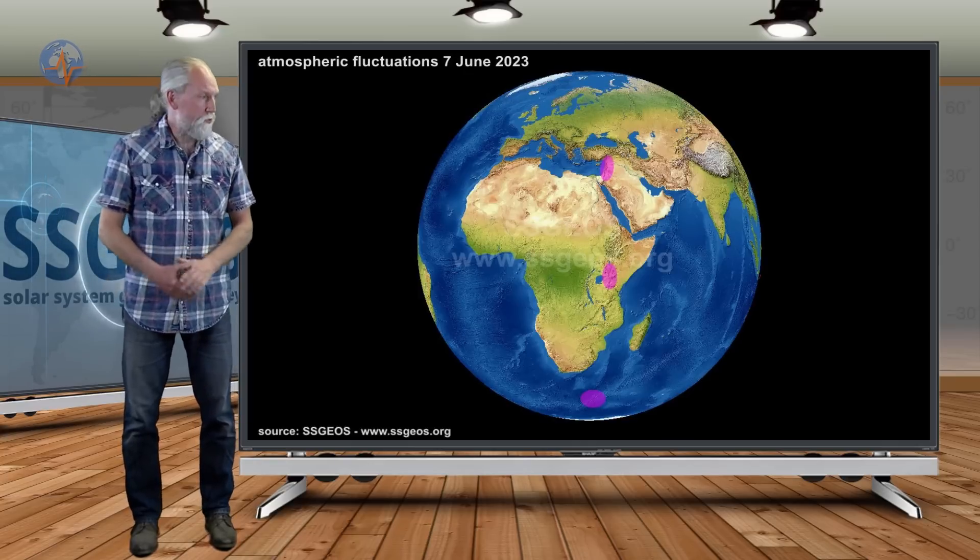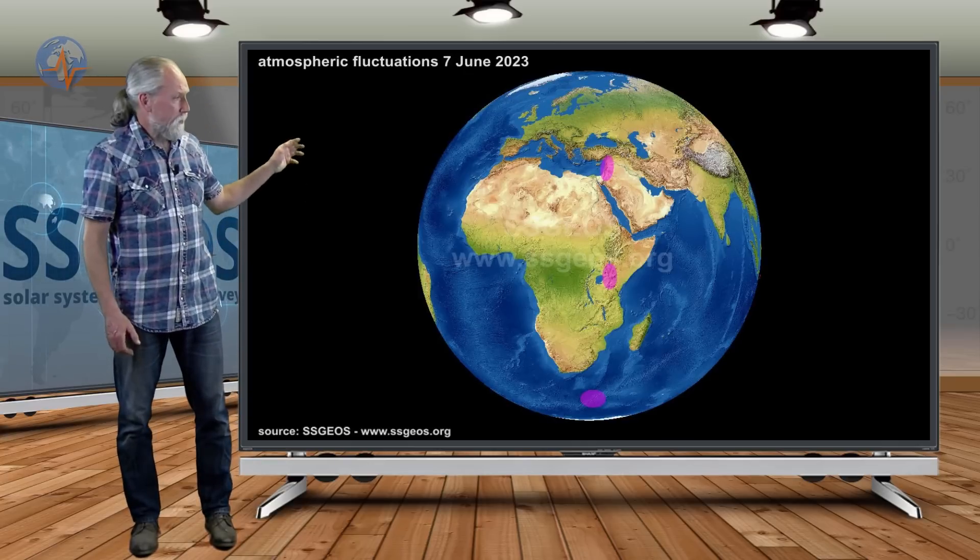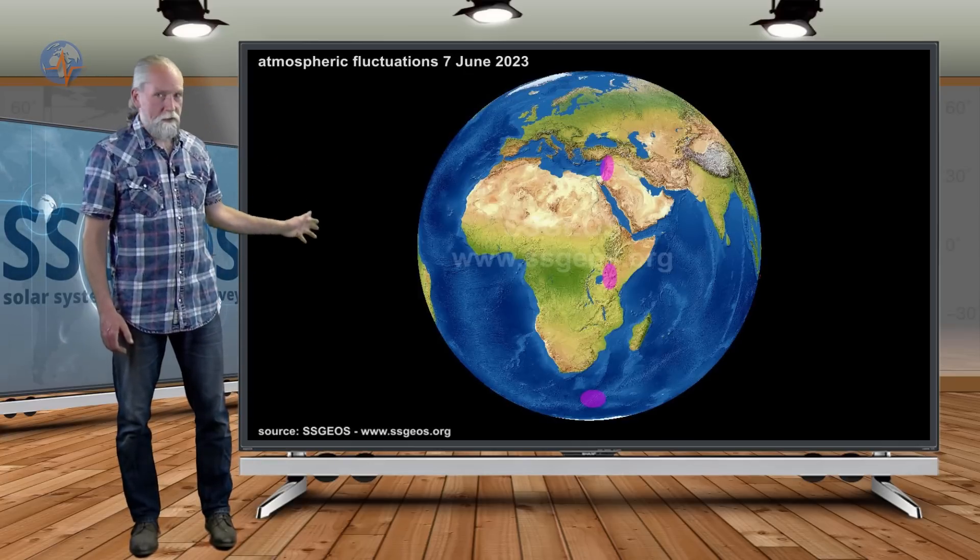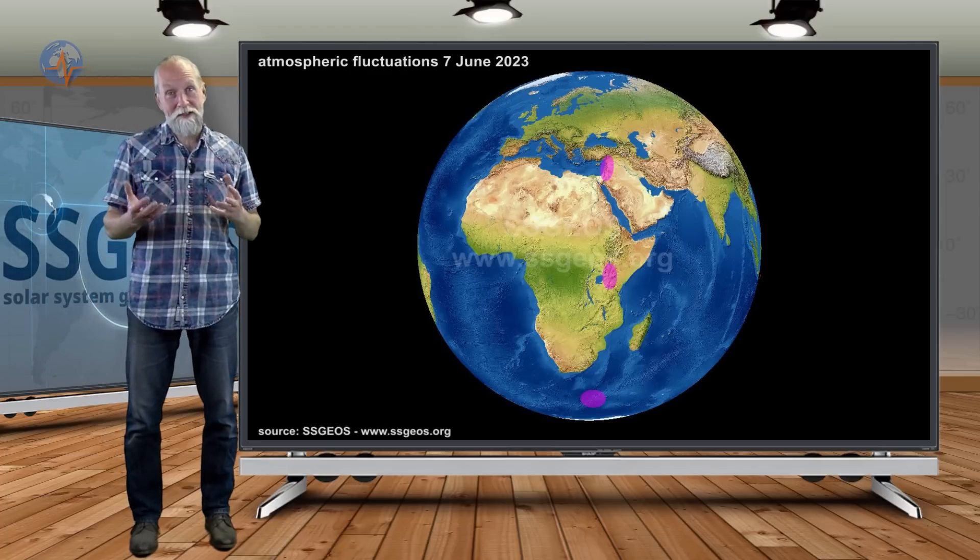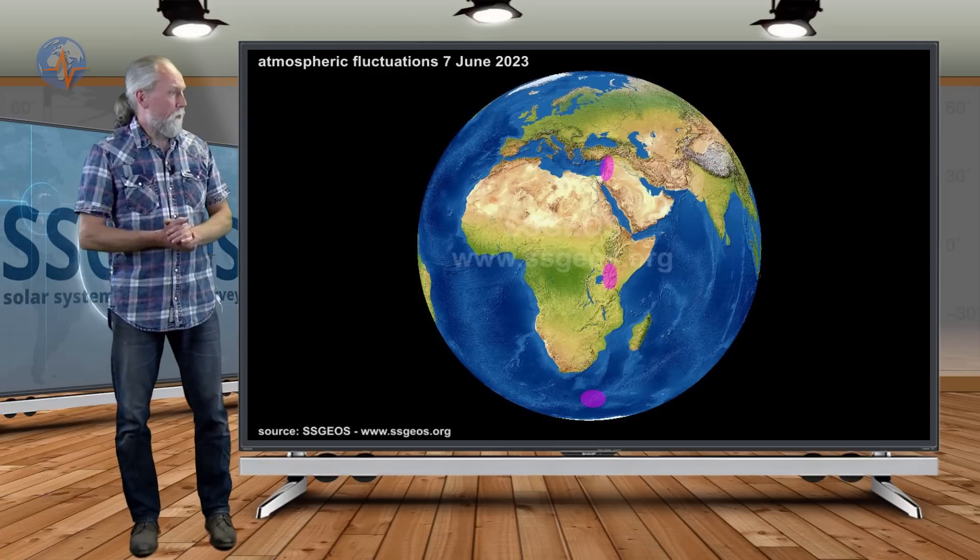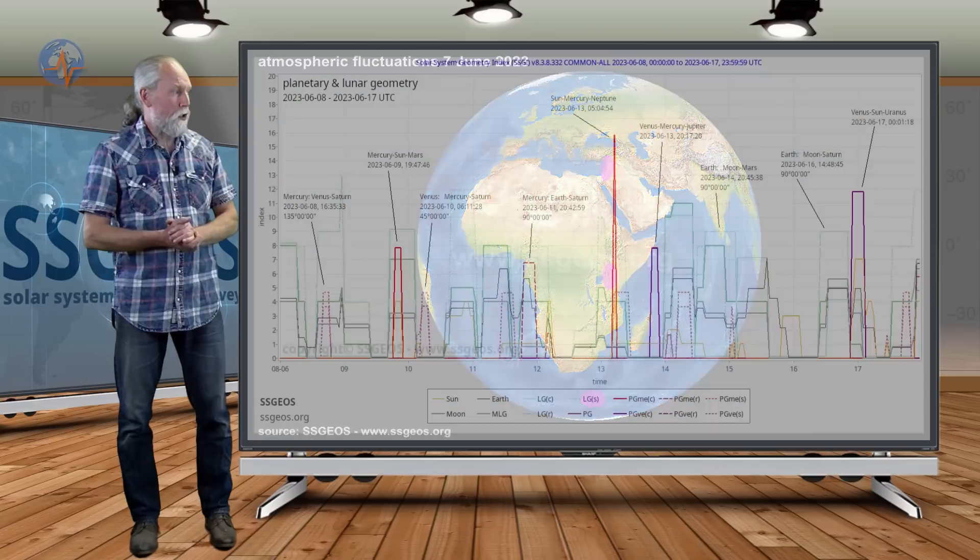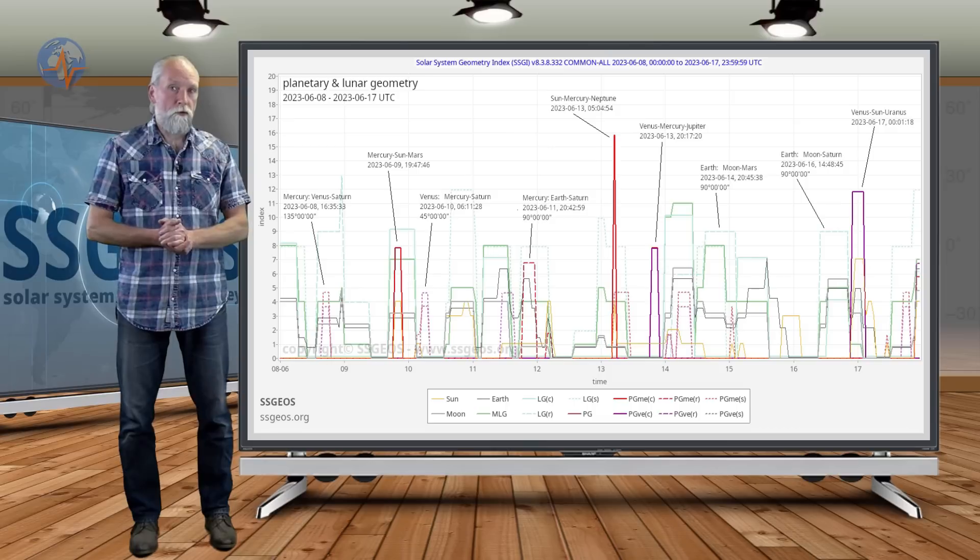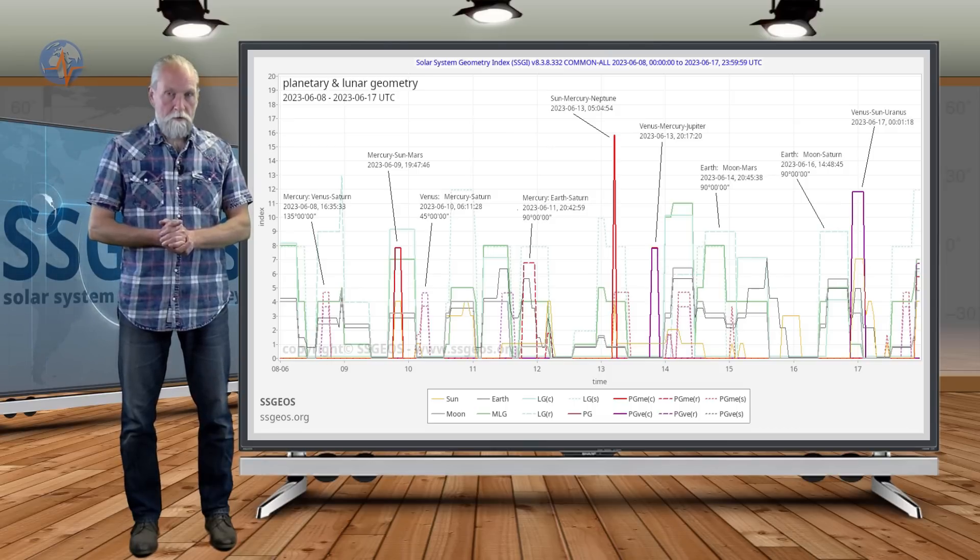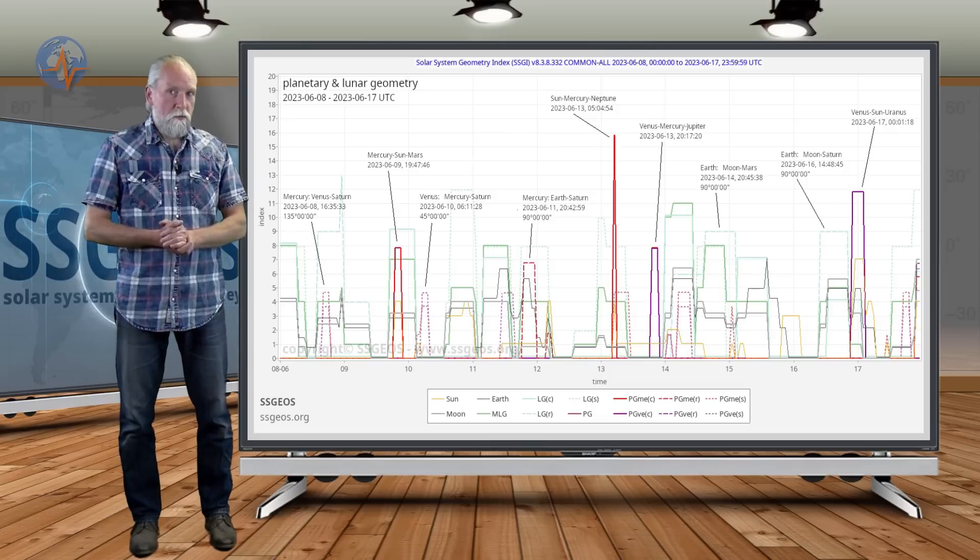Then yesterday we had atmospheric fluctuations marking the Middle East, Central Africa, and South of Africa. This could become interesting if we count about six days from that time. Yesterday we would end up on the 13th, around the 13th, and that would be the time of the convergence of planetary conjunctions. So that is something to keep in mind.